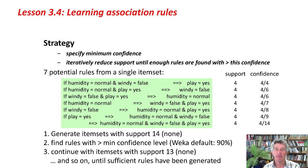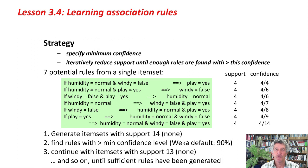This item set can be massaged into seven possible rules by choosing different things on the left and right hand side. The strategy of a priori is to specify the minimum confidence level and then iteratively reduce the support until enough rules are found with greater than this confidence. These rules have got support 4, with confidence values ranging from 100% (4 out of 4) to whatever 4 out of 14 is.